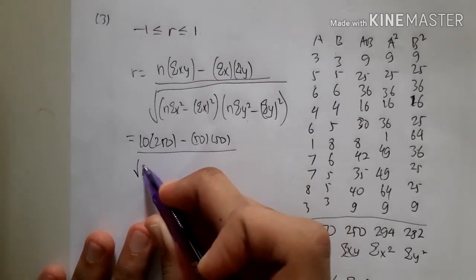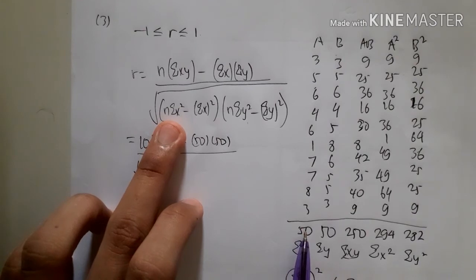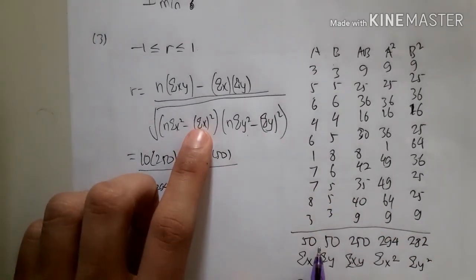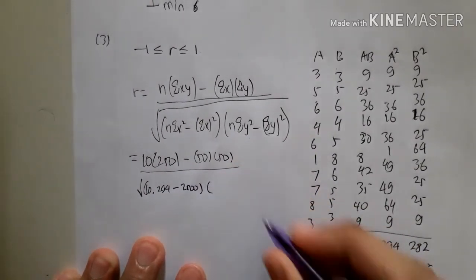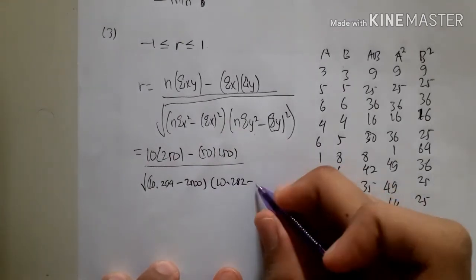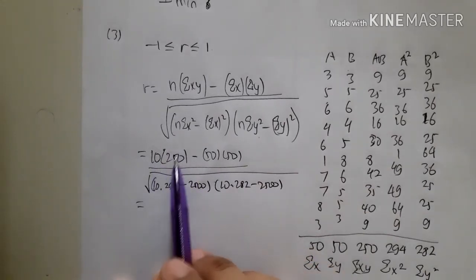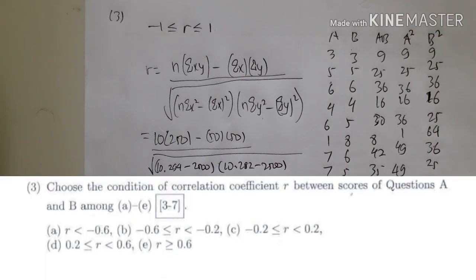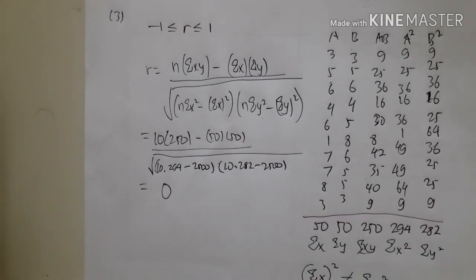Substituting: r = [10·250 − 50·50] / √[(10·294 − 2500)(10·282 − 2500)]. The numerator is 2500 − 2500 = 0, so r = 0. Looking at the options, the only interval containing 0 is option C (between −0.2 and 0.2). The answer is C, which also matches the answer key.